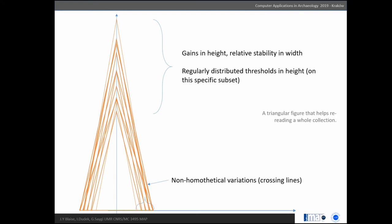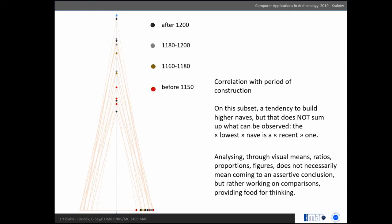In fact, what you observe when you look at the whole collection is gains in height, relative stability in width, but what you observe are thresholds here, here, here. So the triangle figure can be used to re-read a collection. You can also correlate that with dating, and you'll see they were growing bigger but not systematically. In this sample, the smallest is one of the most recent.